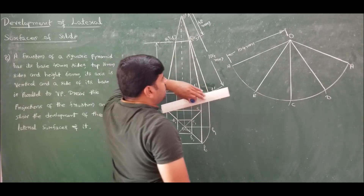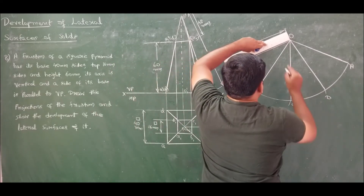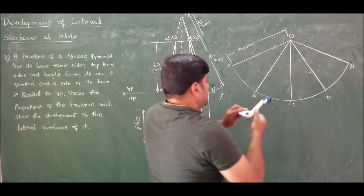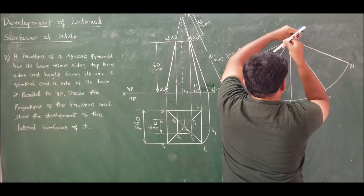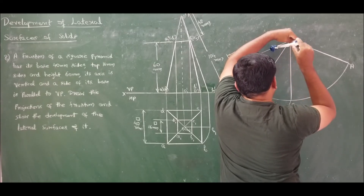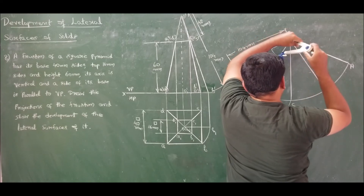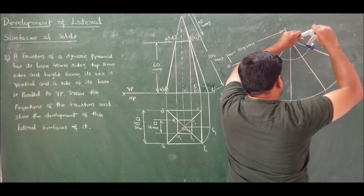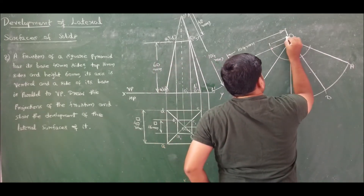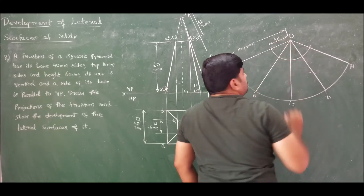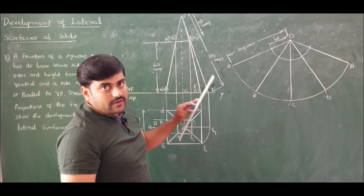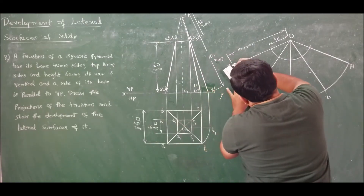We have a frustum at a distance of 42 mm from the apex along the slant edge, so draw another arc at radius 42 mm from O. This arc represents the top edge of the frustum. Since this is a pyramid with sharp edges rather than a curved surface, connect the top edge points A1, B1, C1, D1 with straight lines.